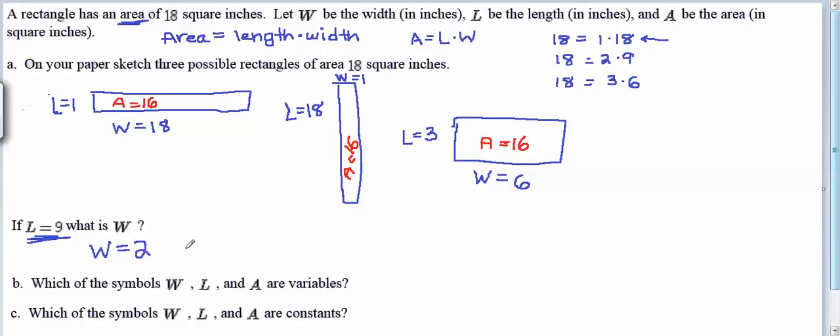And now we're going to look at two key vocab words from this section, the idea of variables and constants. So we've been dealing with the symbols W, L, and A in this situation. The ones that are variables are the ones that could take on multiple values and still meet all the given conditions here. And the given condition here is that the rectangle has an area of 18 square inches.